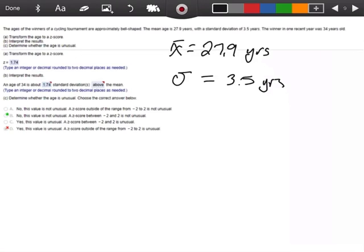It says the winner in one recent year was 34 years old. Actually, I don't know why I'm using X-bar. I need to be using mu because we're talking about population.